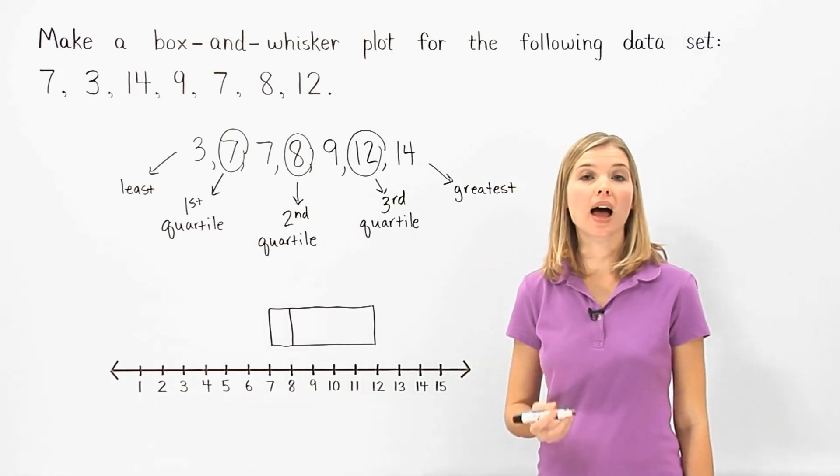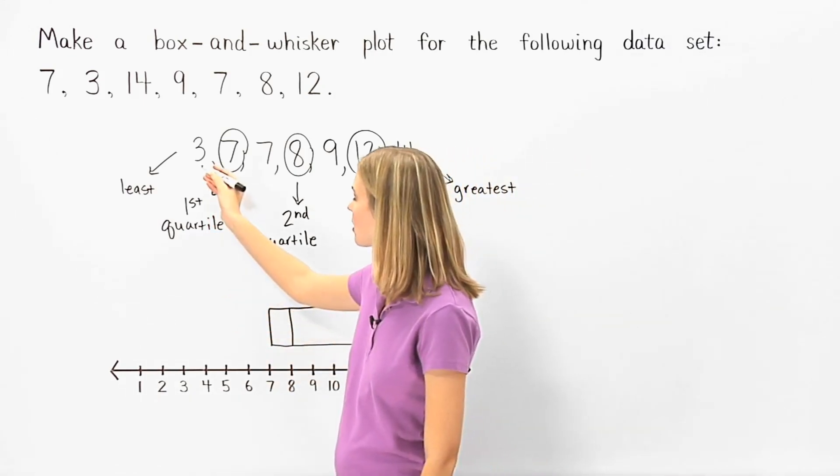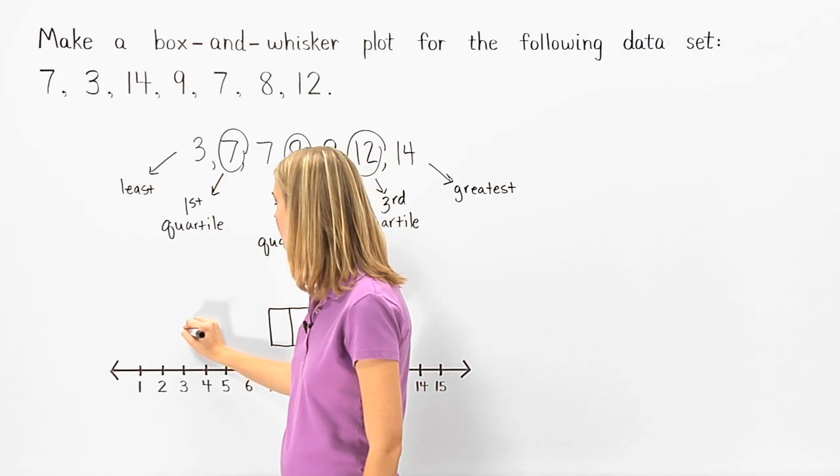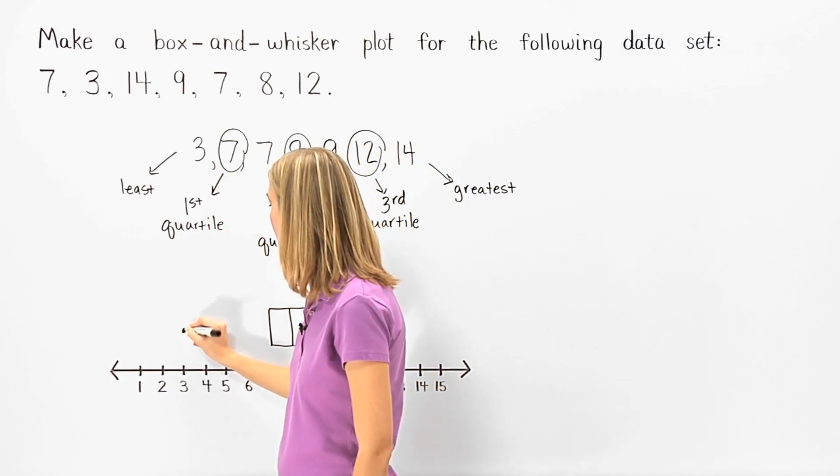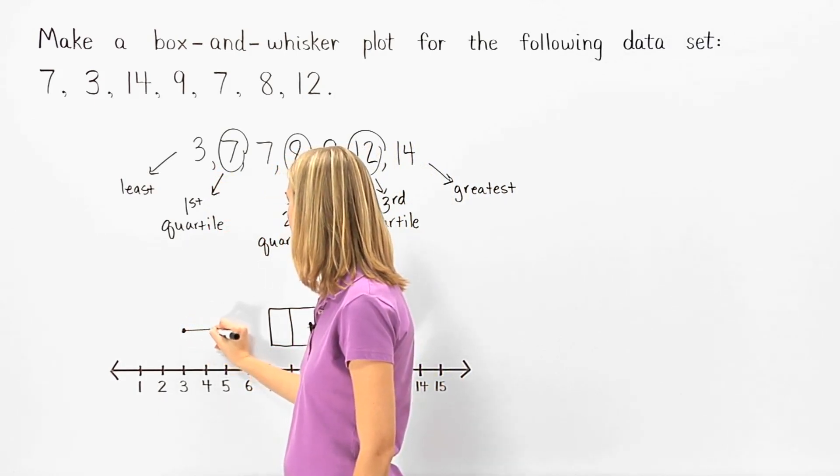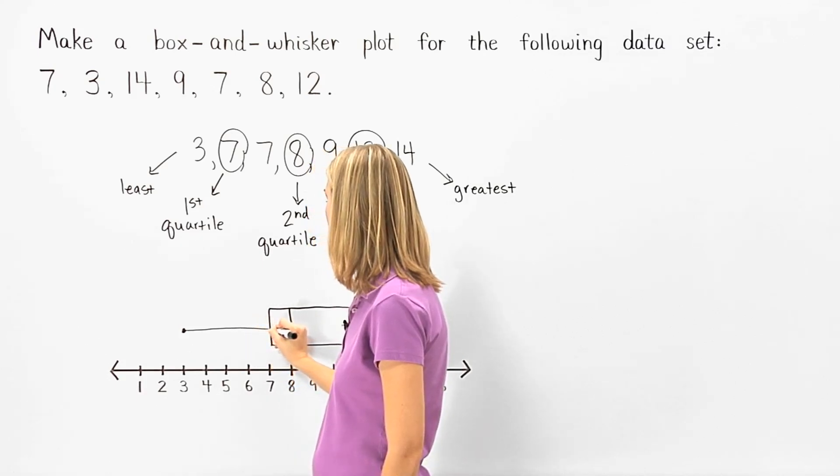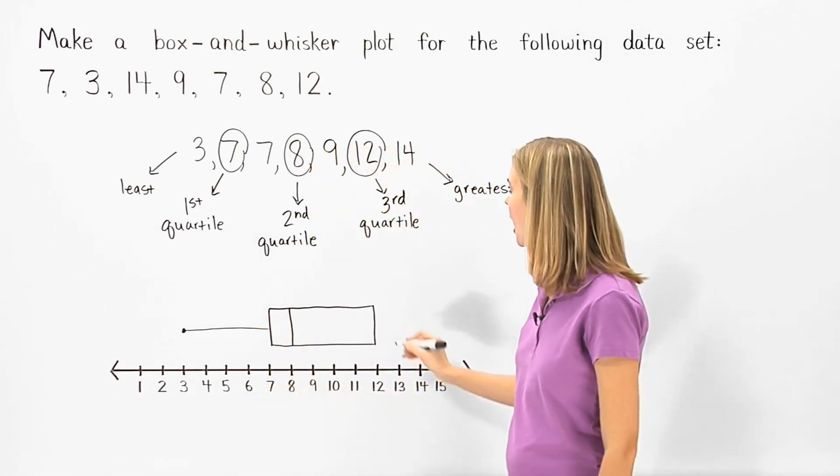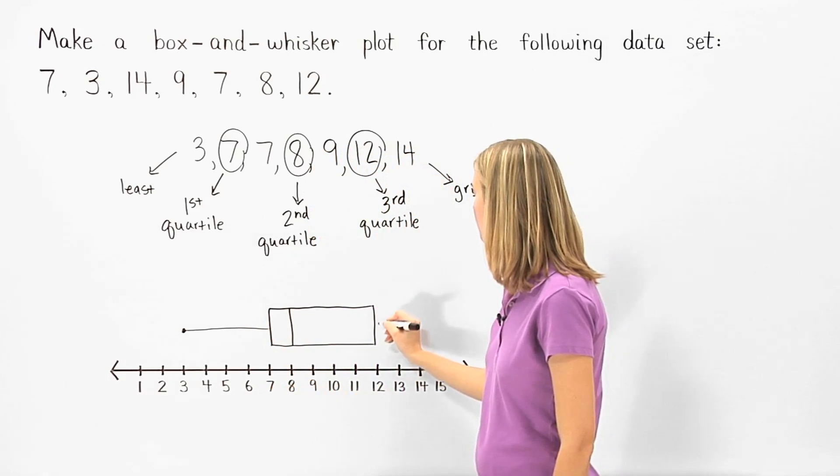Now we draw a line segment from the least number, 3, to the box, and a line segment from the box to the greatest number, 14.